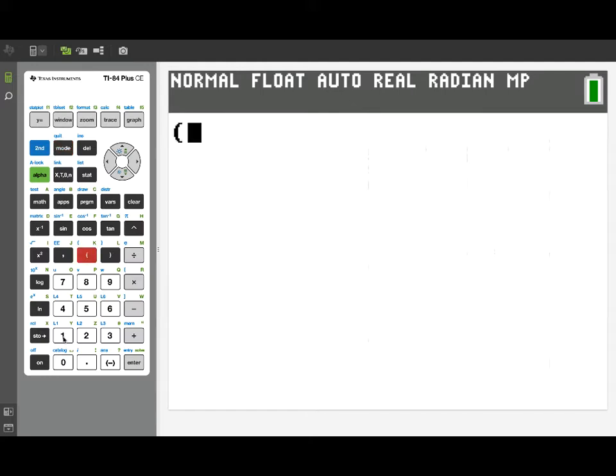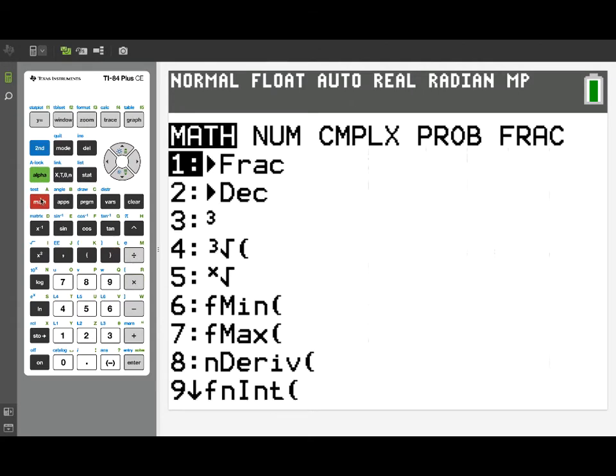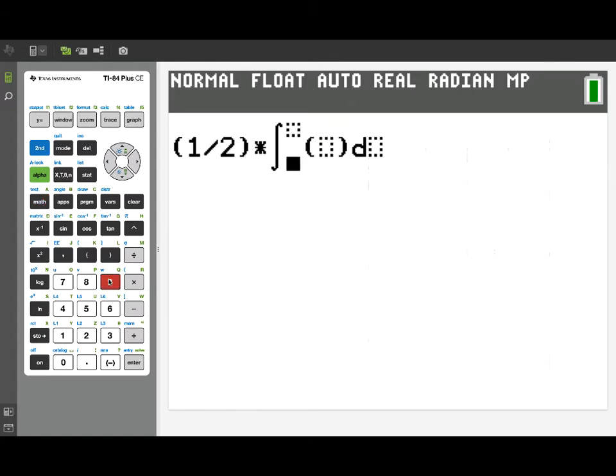What we'll need to do is take a factor of 1 half times the integral of the square of the polar R value. So we'll use fn int, integrate from 0 to pi over 2. That was the bounds on our theta values for that part of the curve. And again, we can just use the pi symbol as we're entering the limits of integration.